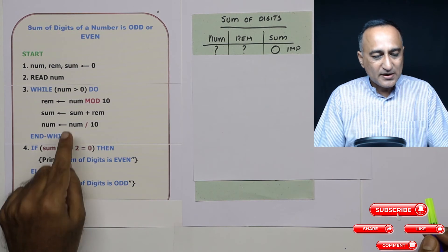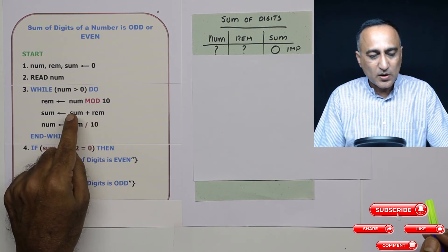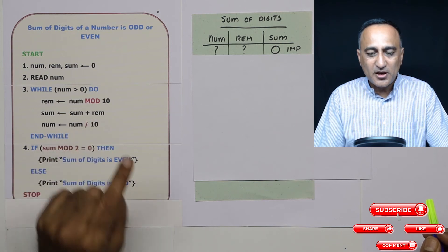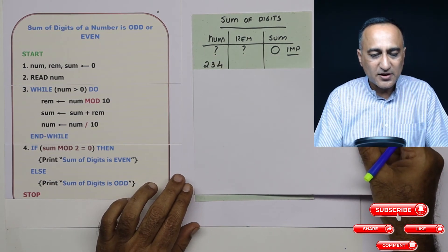Suppose number is 121, sum will be zero plus one first time, then it will be one plus two which is three, the next time it will be three plus one which will be four. So let's take an input number. Let's say the number is 234.